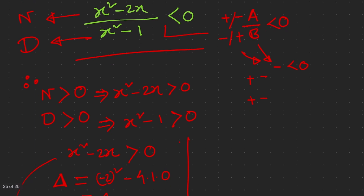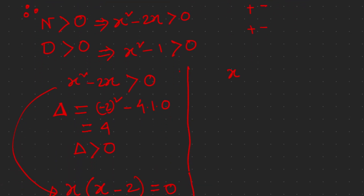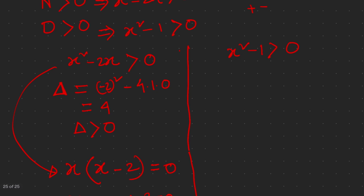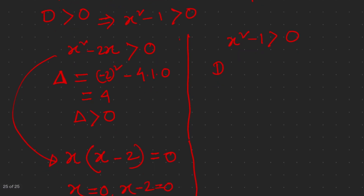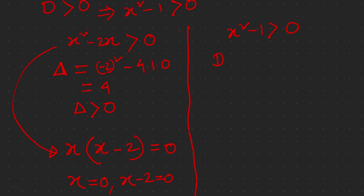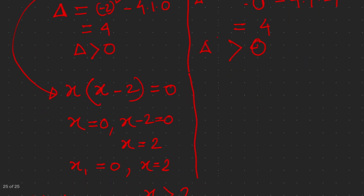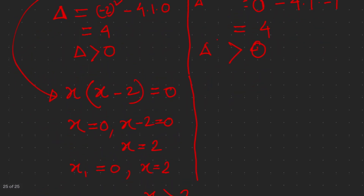Now we find the solution for the denominator. Our denominator is x squared minus 1, and we consider x squared minus 1 greater than zero. Finding the discriminant: delta equals b squared minus 4ac. Here b is 0 and c is negative 1, so delta equals positive 4, which is greater than zero.